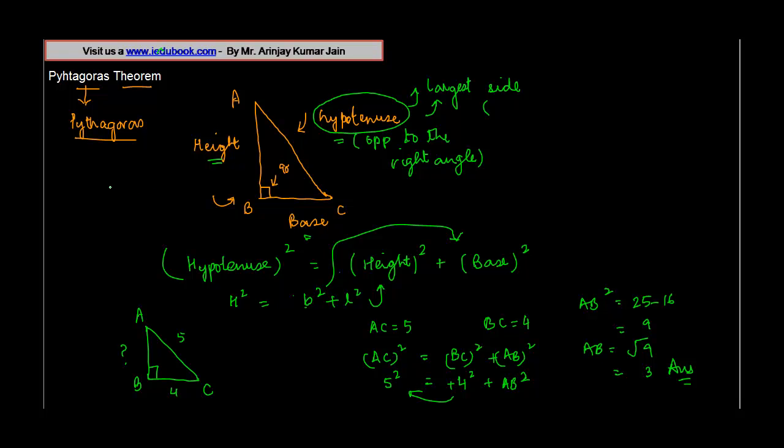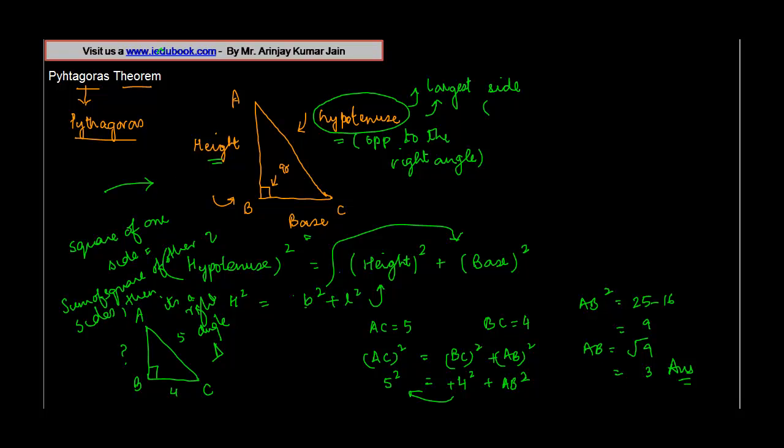The reverse of this theorem is that if the square of one side is equal to the sum of squares of the other two sides, then it's a right angle triangle.